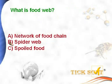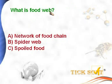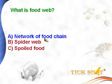What is a food web? Options: (a) network of food chains, (b) spider web, (c) spoiled food. A food web is a network of food chains, so option A is the answer.